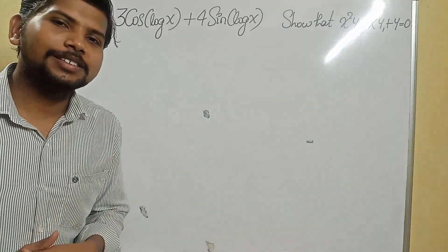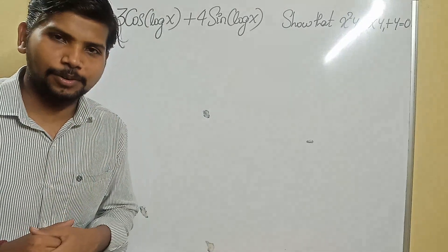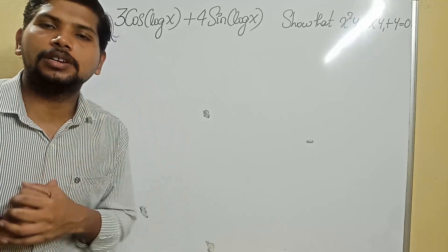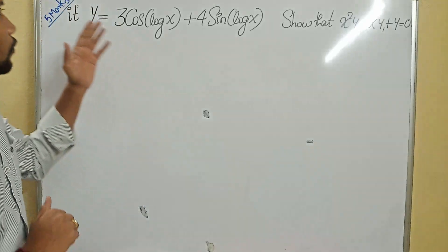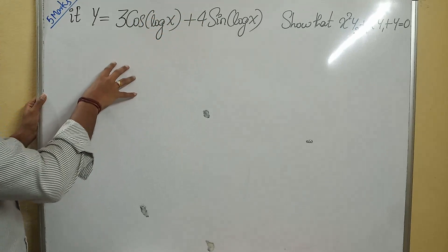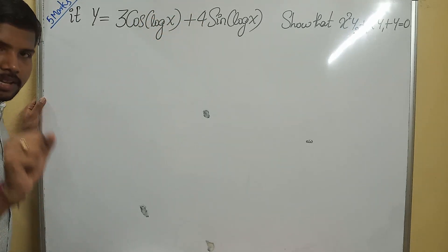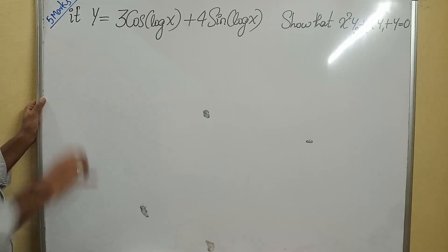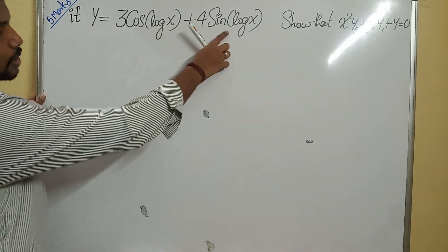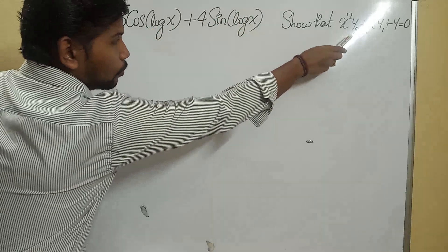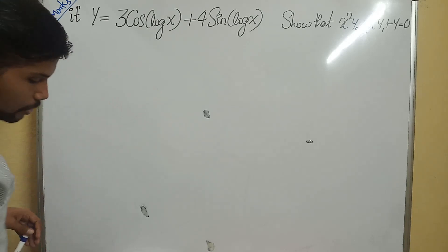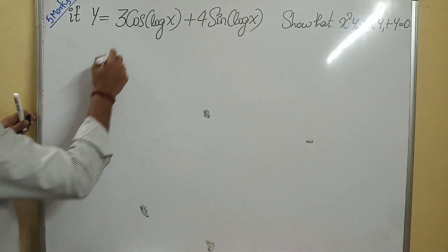Hello students. In the last session we discussed second order derivatives, meaning differentiating a given function two times. Now in this part I'd like to continue with second order derivative problems that are a little more lengthy — the proving or showing type, which appear in the examination for the 5-marks part. The question is: y = 3cos(log x) + 4sin(log x), show that x²y₂ + xy₁ + y = 0. Here y₁ and y₂ denote the first and second derivatives.